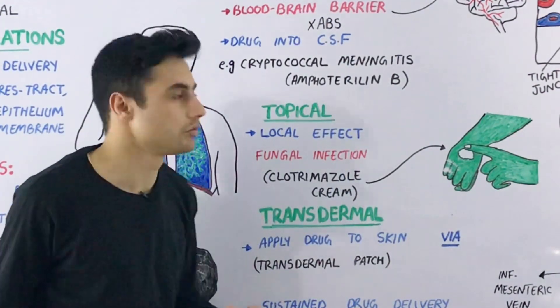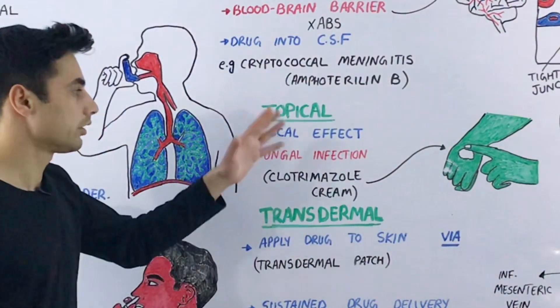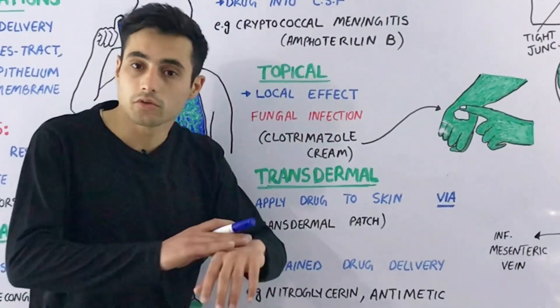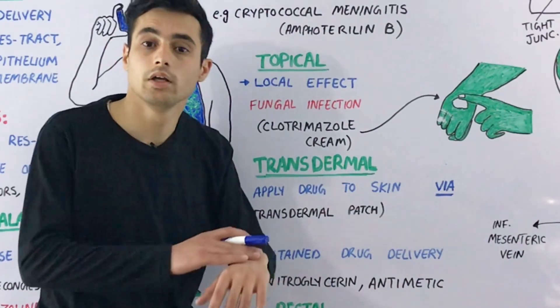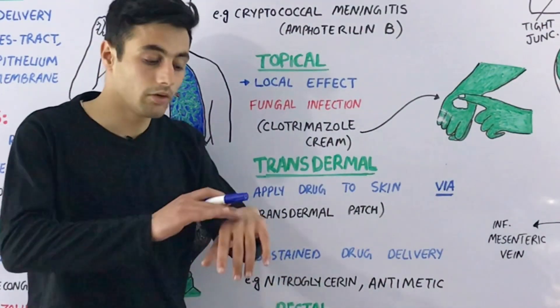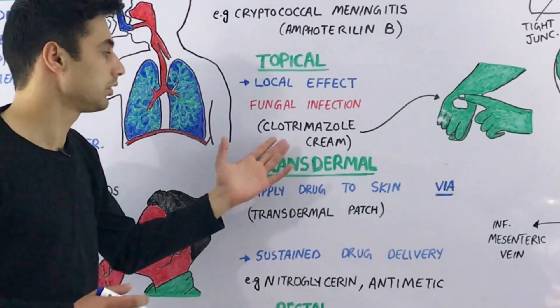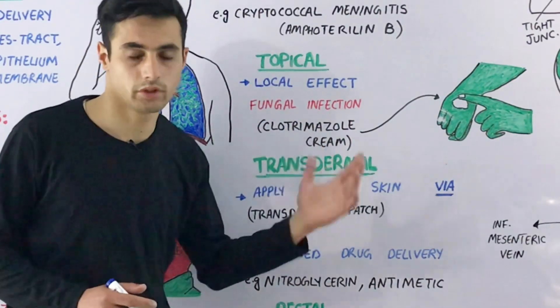Sometimes you need the local effect of a drug. For example, if you have a fungal infection on the skin, you will apply cream or ointment directly on the infection. An example is clotrimazole cream - apply it on the skin to get rid of your fungal infection.